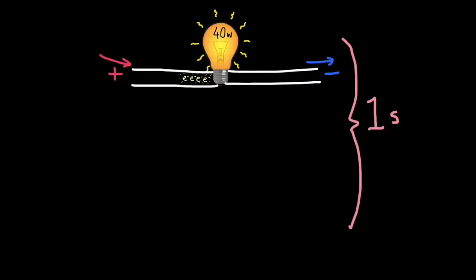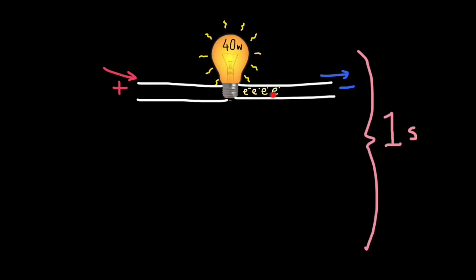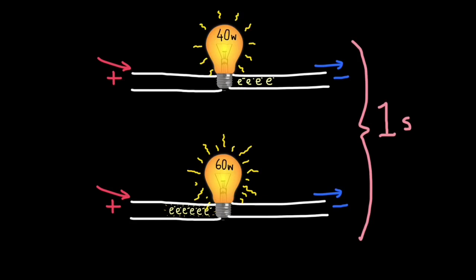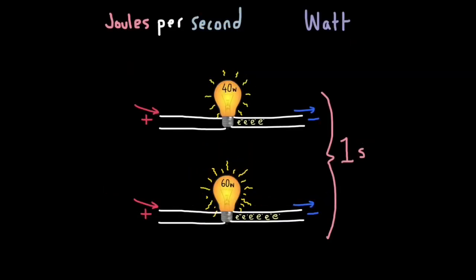So you remember current is the rate of flow of charge. So how much charge is flowing past a point every second, and voltage is the amount of energy the charge carriers carry, the electrons carry. So let's say in one second this specific bulb draws this much current. A 60 watt bulb will draw more current in the same amount of time in one second. So more charge carriers with their energy will pass this point in one second. This is why it glows brighter. So this is probably the most important part of the lesson.